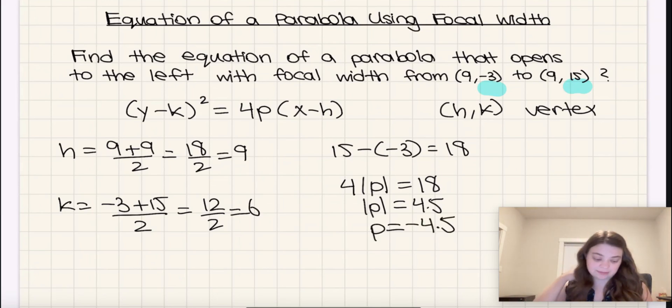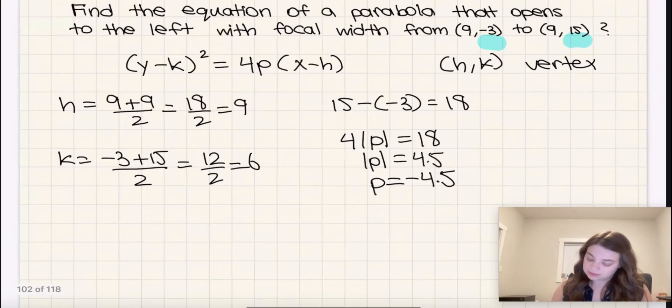So negative 4.5 is our p value in this case. Okay, so now we've found all our values. All we need to do left is we just need to plug those values into our original expression.